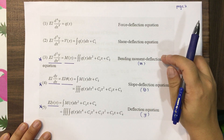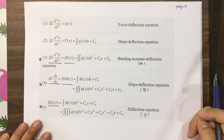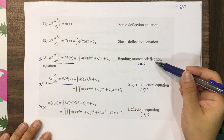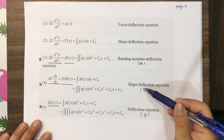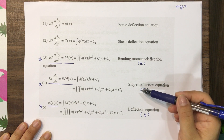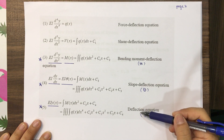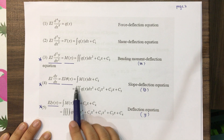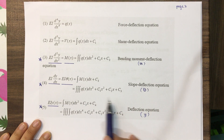These three equations — bending moment, slope deflection, and deflection — are the most important ones. From the moment equation, you integrate to get the slope deflection equation, and then integrate again to get the deflection equation. This is the formula showing how the integration is performed.